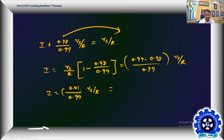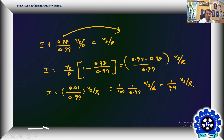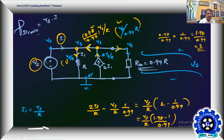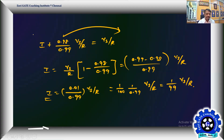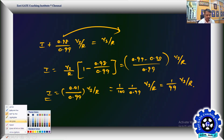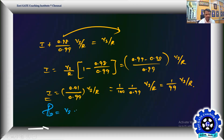This simplifies to i = 0.01/0.99 · Vs/R = 1/99 · Vs/R, which is a very small current. The minimum power delivered by the source is therefore P = Vs · i = Vs × (1/99)(Vs/R) = Vs² / (99R).